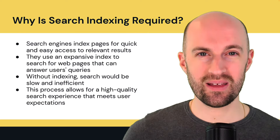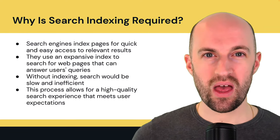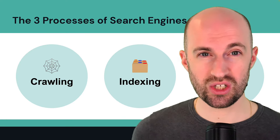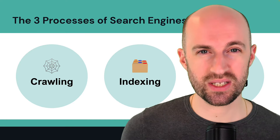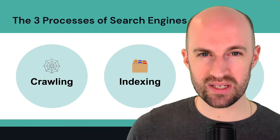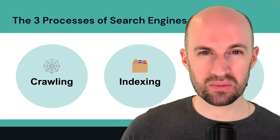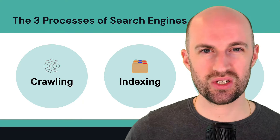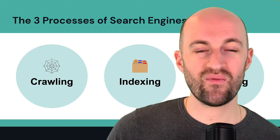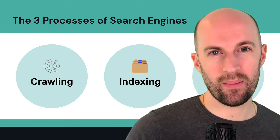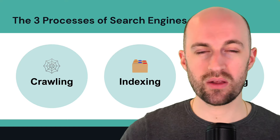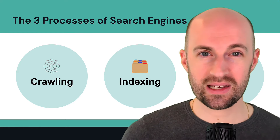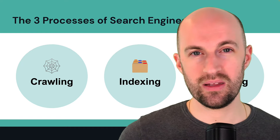There are three main processes of search engines. First, they crawl the site to discover the pages on your website. Second, they index those pages in their database, placing them in the right sections, orders, and categories. Third, they rank those pages against competitors and other relevant results to make sure your page shows up in the right search results in the right location.